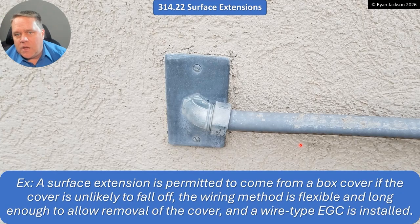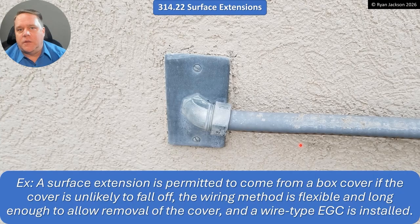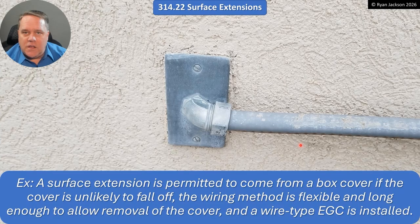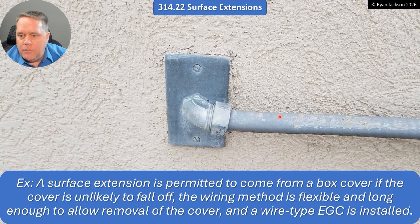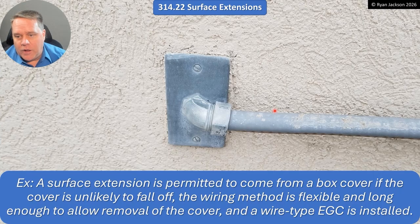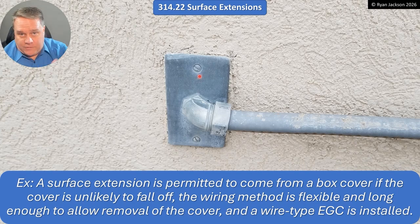There's an exception that says a surface extension doesn't have to come from an extension ring — it can actually come from a box cover. The cover must be unlikely to fall off, the wiring method needs to be flexible and long enough to allow removal of the cover, and a wire-type equipment grounding conductor needs to be in that raceway. So even if I meet the criteria in 250.118 to use liquid-tight as the equipment ground, I still have to have a wire-type EGC in there, because this is a surface extension from the front of a box.